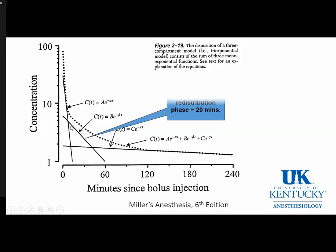On a logarithmic scale, looking at the half-life of the redistribution phase: if we look at a concentration of 4, draw a line over and down, that is around 15 to 20 minutes. Dropping the concentration by half from 4 to 2 and drawing a line over, that falls around 35 to 40 minutes. 40 minus 20 is approximately 20 minutes, so the half-life of the redistribution phase in this drug model is approximately 20 minutes.